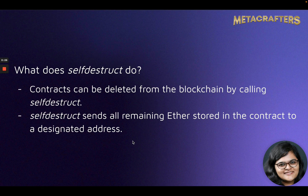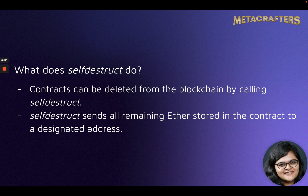So what does self-destruct really do? By calling self-destruct, contracts — or instances of contracts — can be deleted from the blockchain. What this does is it sends all the remaining Ether in that contract to a designated address that goes as a parameter of the self-destruct call.